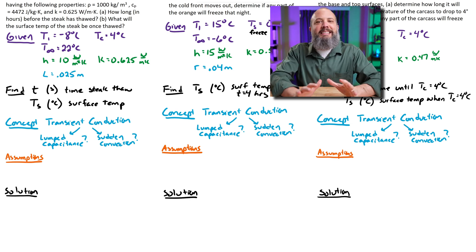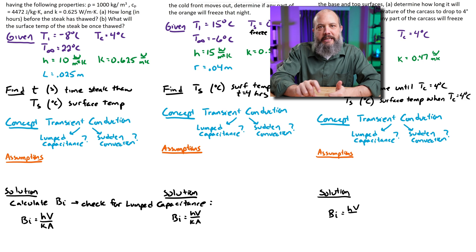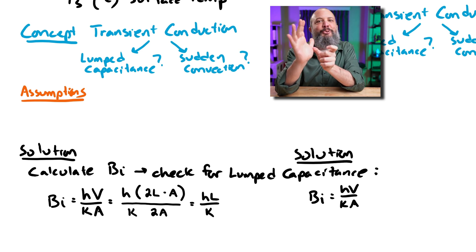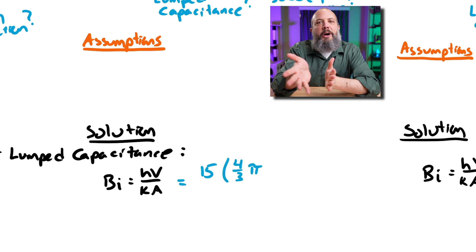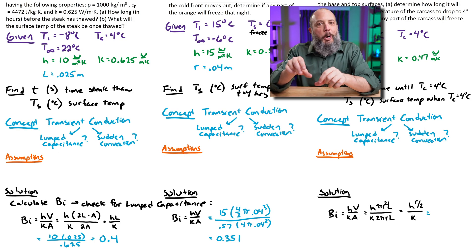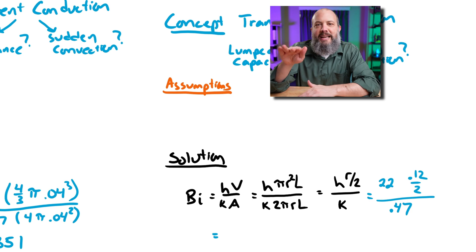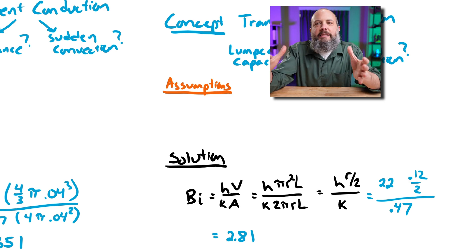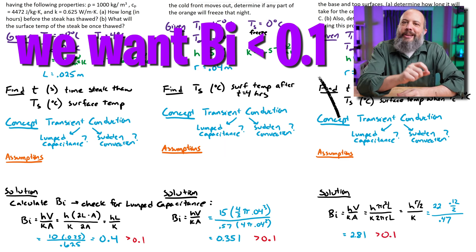To check for lumped capacitance, you have to find the Biot number: H over K times volume divided by surface area. For the steak, volume is the surface area of the top times the thickness 2L, and the total surface area is 2A for both sides. For a sphere, it's 4/3 π r³ divided by 4π r². For the cylinder, volume is π r²L and surface area is 2πrL — just the perimeter times the length — since we're ignoring heat transfer through the ends. After calculation, I get Biot numbers of 0.4 for the steak, 0.35 for the sphere, and 2.8 for the cylinder.